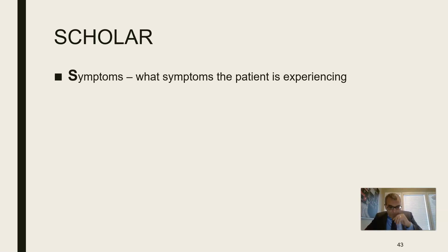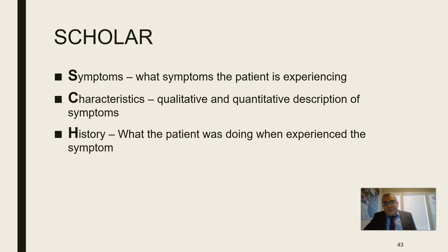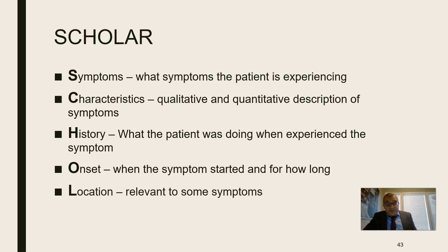S stands for Symptoms — what symptoms is the patient experiencing? C stands for Characteristics — a qualitative and quantitative description of the symptoms. For example, 'How severe is your headache on a scale of one to ten?' or for constipation or diarrhea, 'How often do you go to the washroom?' H stands for History — what the patient was doing when they experienced the symptom. O stands for Onset — when the symptom started and for how long: two days ago, three months ago? That information is very helpful.